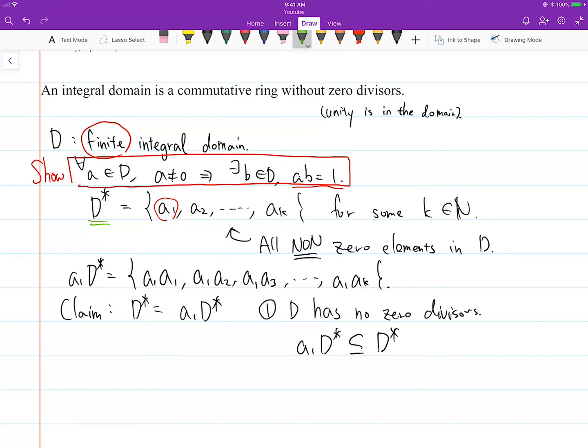Here it looks like we have K elements, but we're not sure if there are duplicates. If there are no duplicates here, that means A1 D star has K different non-zero elements. Then that means it's exactly the same as D star, because A1 D star is, after all, a subset of D star. But if A1 D star has the exact same number of elements as D star, it's got to be the same set. If it's a subset and has the same number of elements, then it has to be the same set.